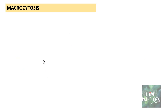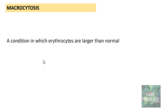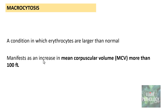By definition, macrocytosis is a condition in which erythrocytes are larger than normal, manifesting as an increase in mean corpuscular volume of more than 100 femtolitres. The key value to remember is MCV more than 100 femtolitres, and the RBCs are larger than normal — larger than the nucleus of the small lymphocyte, which is our comparison reference.